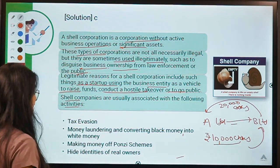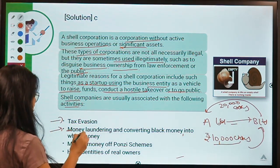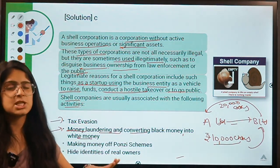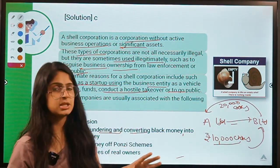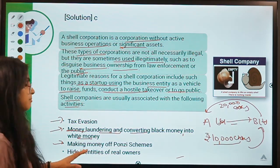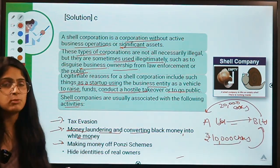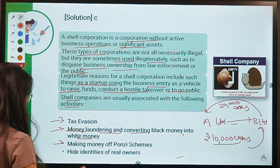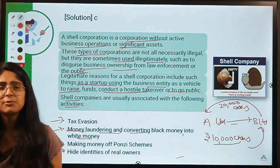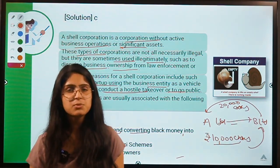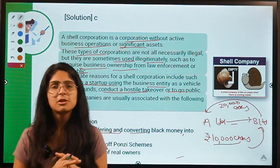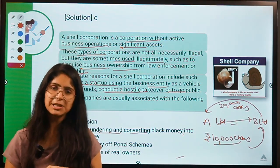Shell companies are associated with activities like tax evasion, money laundering, accounting fraud, converting black money into white money, and concealing proceeds from Ponzi schemes. Laundered money is routed through a network of shell companies to become untraceable. Hiding the identities of real owners is another common illegal use. That is it for today's session — these were the five questions. I hope you learned something new. Give us a thumbs up, take care of yourself and your studies, and I'll see you in the next session.